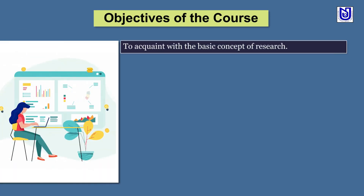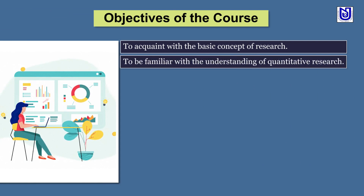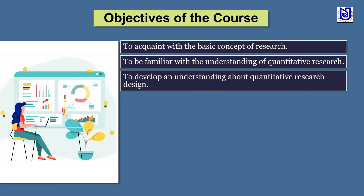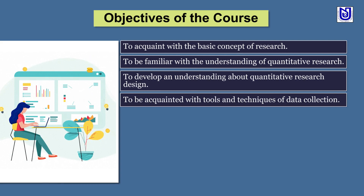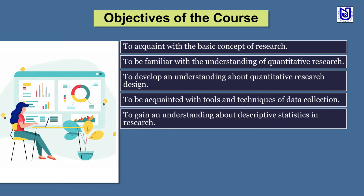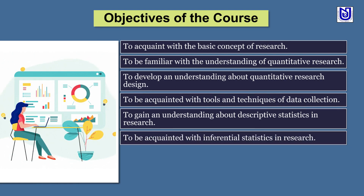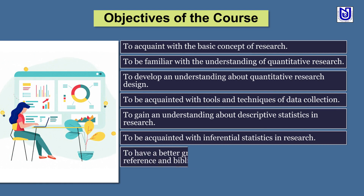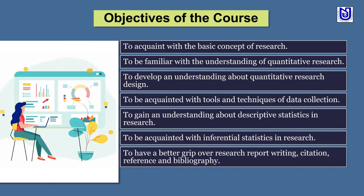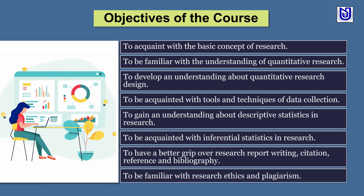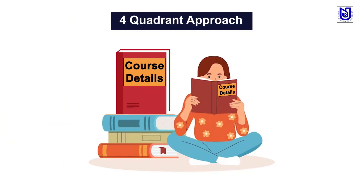The objectives of the course are: to acquaint students with the basic concept of research; to be familiar with the understanding of quantitative research; to develop an understanding about quantitative research design; to be acquainted with tools and techniques of data collection; to gain an understanding about descriptive statistics in research; to be acquainted with inferential statistics in research; to have a better grip over research report writing, citation, reference and bibliographics; and to be familiar with research ethics and plagiarism.